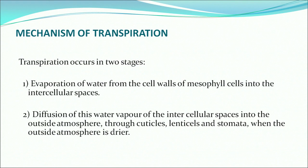Transpiration plays an important role in mineral salts absorption, absorption of water, and also the cooling system. Transpiration occurs in two stages. First, the evaporation of water from the cell walls of mesophyll cells into the intercellular spaces. Next, the diffusion of water vapor from the intercellular spaces into the outside atmosphere through cuticles, lenticels, and stomata. When the outside atmosphere is drier, water passes in the form of water vapor from the cells through cuticles, lenticels, and stomata.